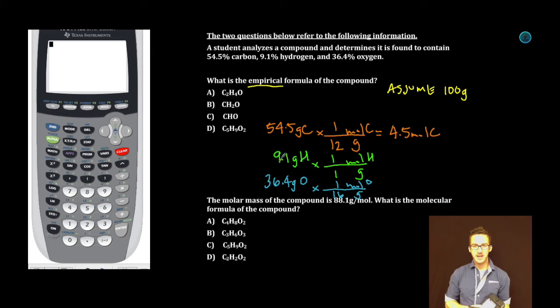9.1 grams of hydrogen—easy enough, times 1 divided by 1, gives 9.1 moles. For our last one, 16: how many times does that go into 36.4? 16 times 2 would be 32, we need 4 more grams. 4 is a quarter of 16, so we've got 2.25 moles of oxygen. These are all estimates, roughing it.